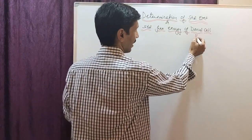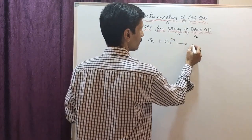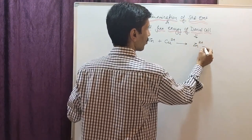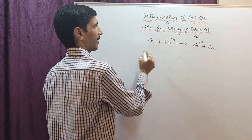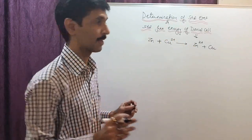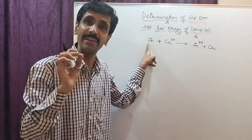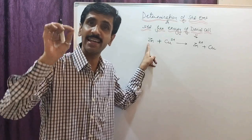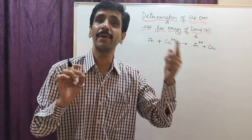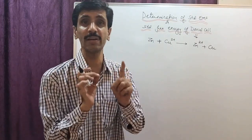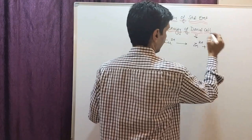When you talk about the Daniel cell, it is going to be made up of two half cells — one half cell comprising of zinc, and the other half cell comprising of copper. The net cell reaction (NCR) for the Daniel cell is represented as: Zn + Cu²⁺ → Zn²⁺ + Cu. We are talking about a forward reaction; the reaction is reversible as well, but right now we are considering only the forward reaction.